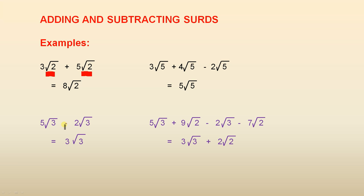Next example: 5 times the square root of 3 minus 2 times the square root of 3. 5 minus 2 gives you 3, so the answer is 3 times the square root of 3. The square root of 3 and the square root of 3 are similar to like terms — that's why we can do it.